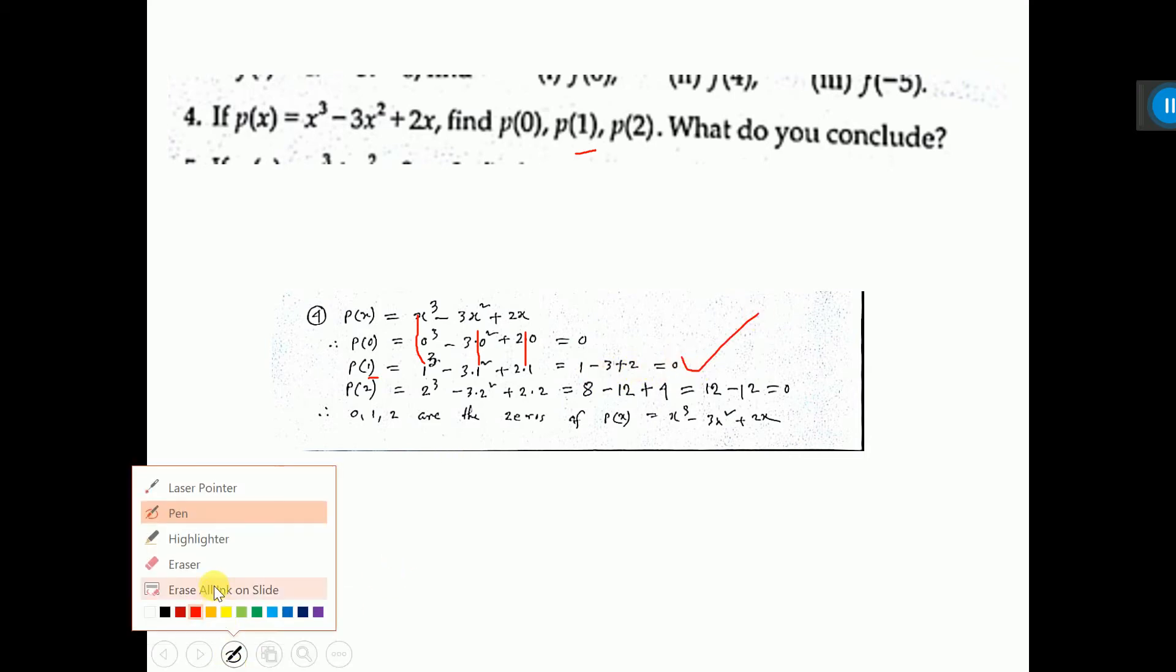Now, let us do the next one. So, P(2). Put the value here. Instead of x, you put 2. So, 2 cubed minus 3 into 2 square plus 2 into 2.